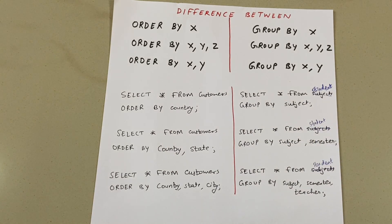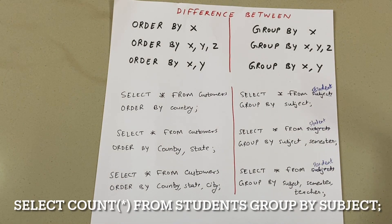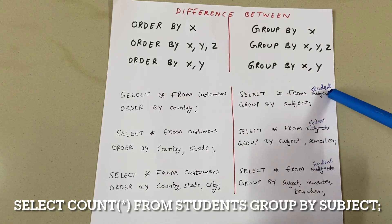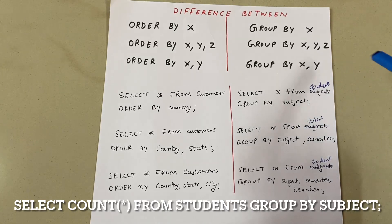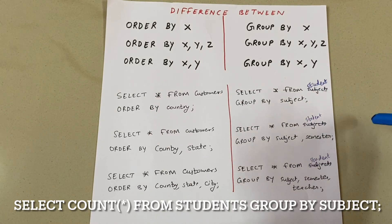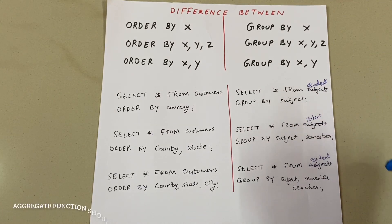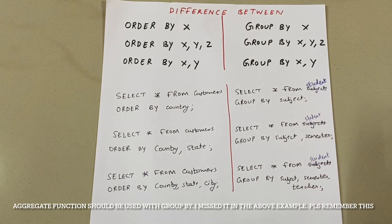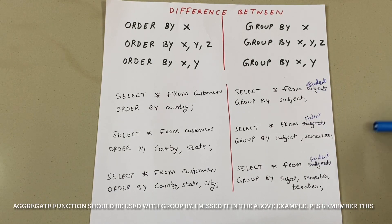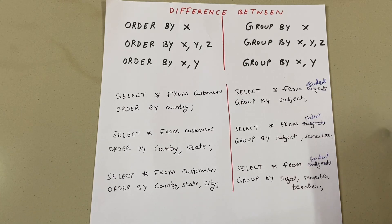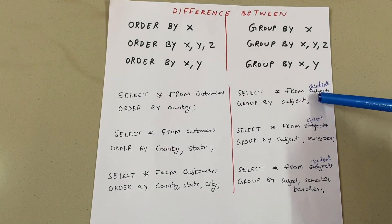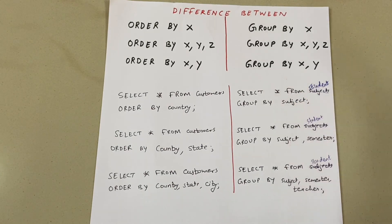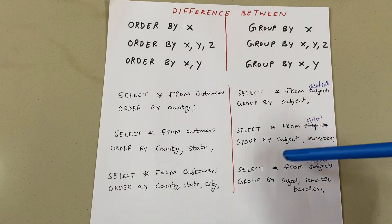Now let's see GROUP BY. What GROUP BY does is group your output. When you write SELECT * FROM students GROUP BY subject, suppose subject has three values — English, Maths, and Science — then all the students with subject English will be in one group, all students with Maths in one group, and so on.